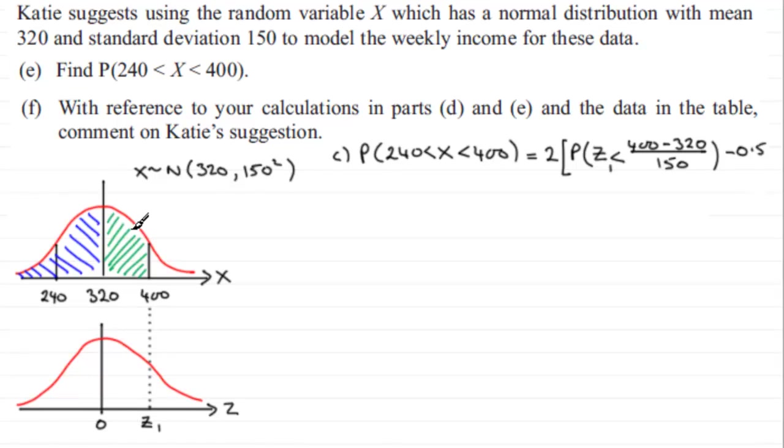So this is going to be twice the probability of z1 being less than—and if you work this value out you'll find you get 0.5333 and so on—and then from that we subtract the 0.5. So the z1 value here is in fact 0.5333.